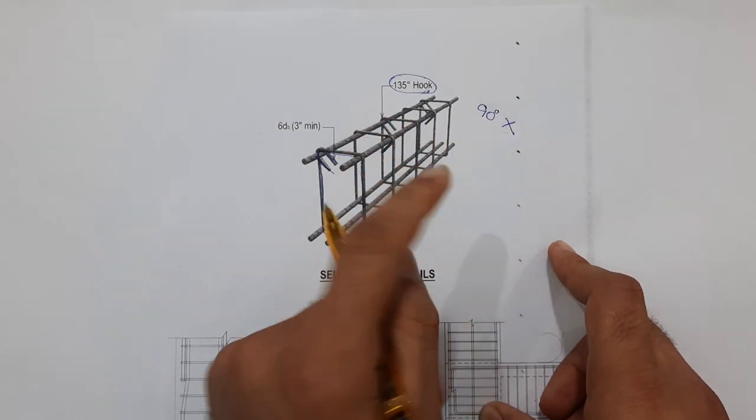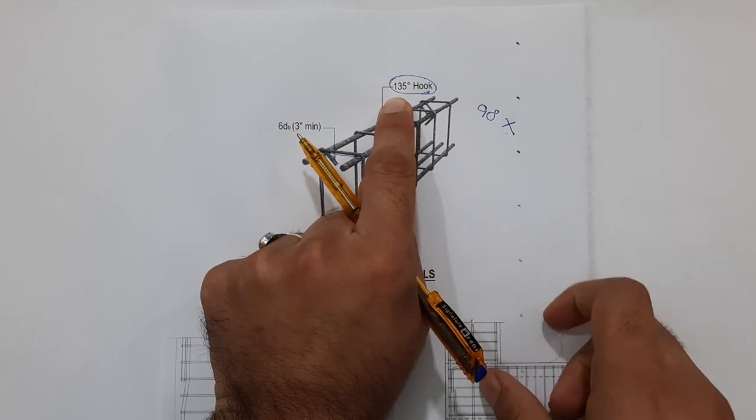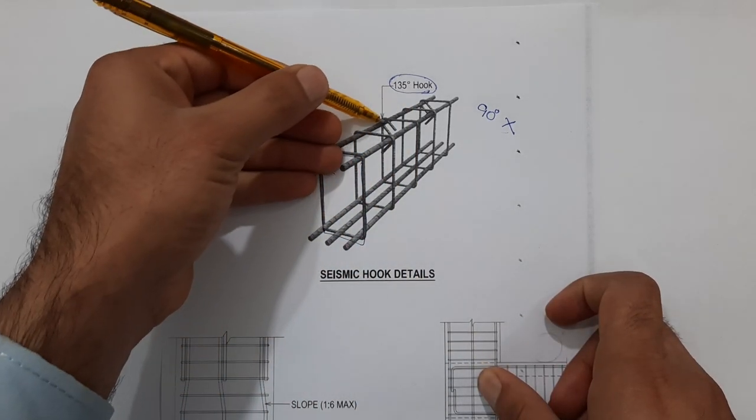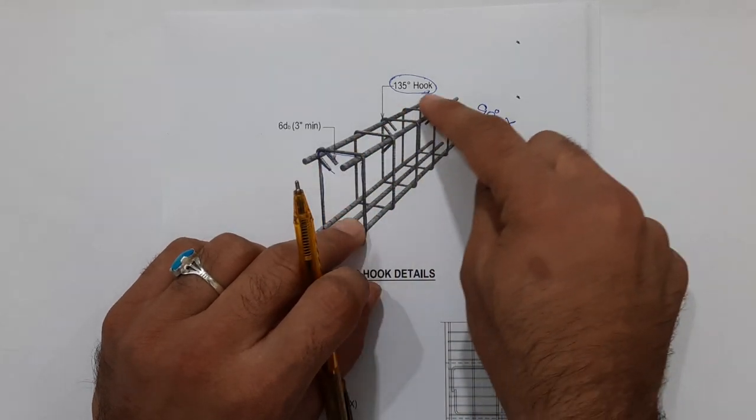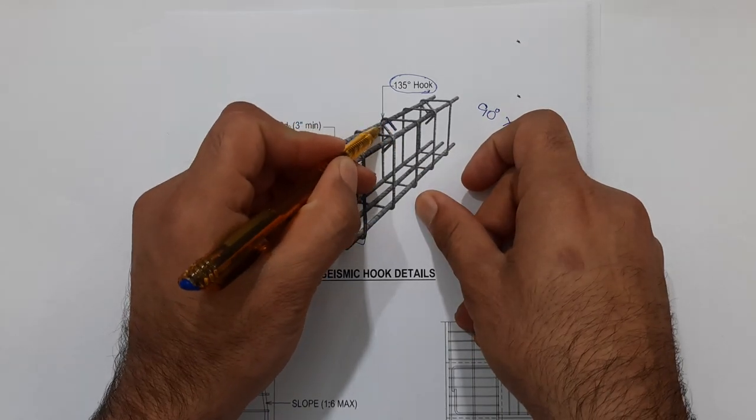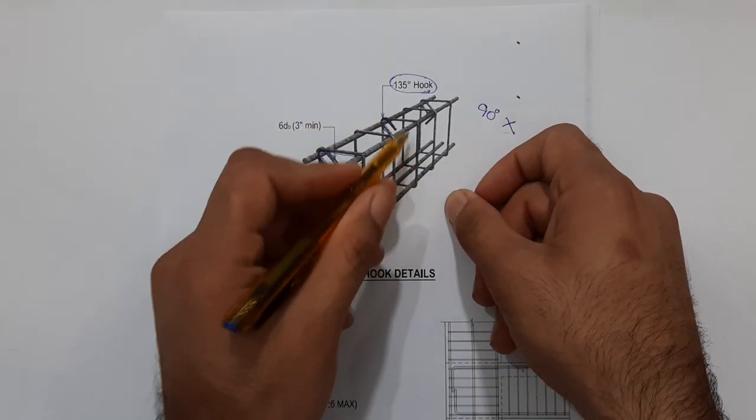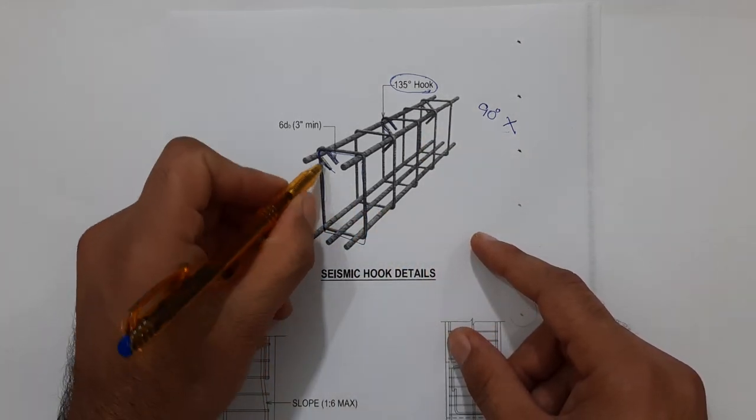The hooks should be placed alternately, not in the same direction. Sometimes the hooks should be placed on the upward side, sometimes at the downward side. This is very important.